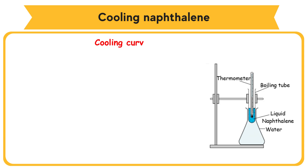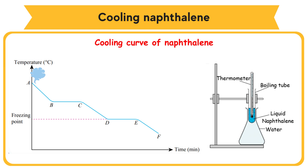Cooling curve of naphthalene. At point A, naphthalene exists as gas. At point B, gas starts to condense. At point C, naphthalene exists as a liquid. When the liquid cools, the particles in the liquid naphthalene lose kinetic energy. The particles move more slowly when the temperature falls from point C to point D. At point D, liquid naphthalene starts to freeze. During the freezing process, the temperature of naphthalene remains constant, because the loss of heat to the surroundings is balanced by the heat energy liberated when particles attract one another to form a solid. At this temperature, both solid and liquid are present.